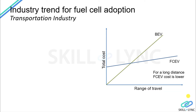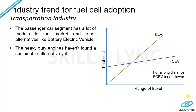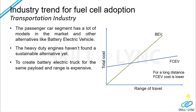Shifting focus to the transportation industry — buses, light duty trucks, and heavy duty trucks — passenger cars have many powertrain alternatives like battery electric, hybrid, plug-in hybrid, and mild hybrid vehicles. However, vehicles in the transportation sector are still heavily dependent on heavy duty diesel engines. A battery electric truck doesn't make a lot of commercial sense. Looking at a graph with range of travel on the x-axis and total cost of development on the y-axis: for battery electric vehicles, increasing range requires increasing cost, mainly due to adding more battery capacity.